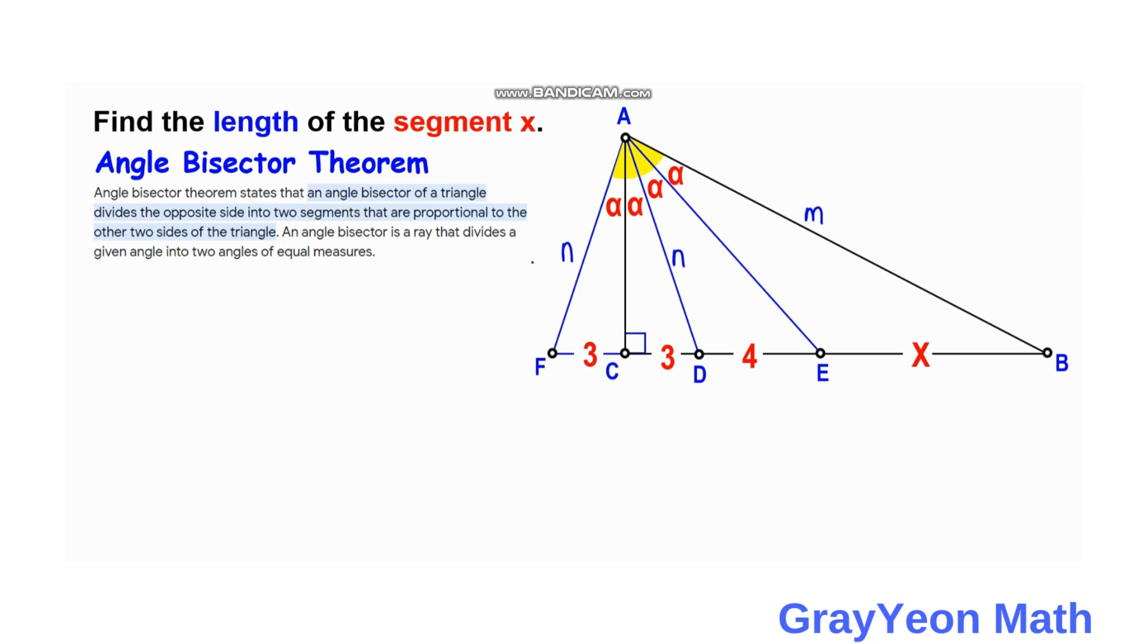In our case, if you focus on triangle ABF, the angle bisector we need to focus on is AD. It divides this angle at A into two equal angles, that is 2 alpha and 2 alpha.